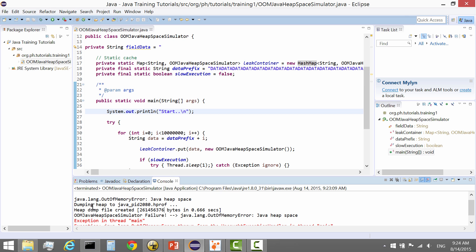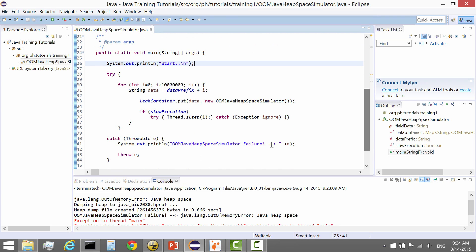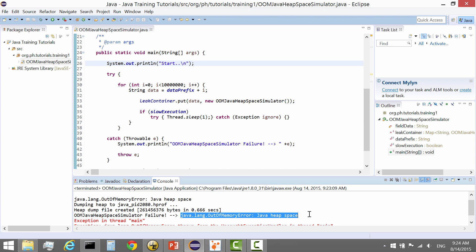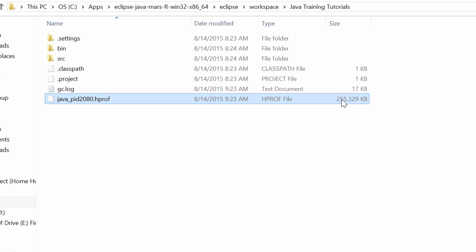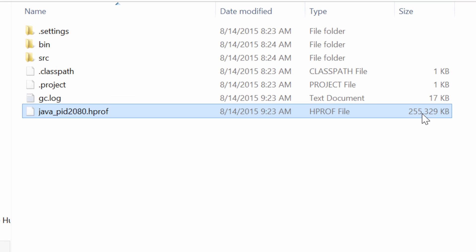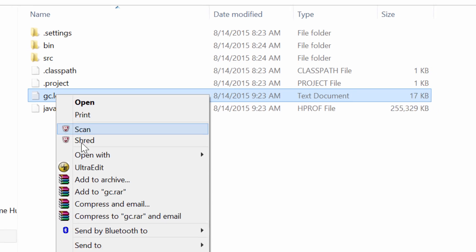That's what happened here. We got the OutOfMemoryError which we caught, and the program exited. If we go in our project, you'll see the heap dump file was generated - 255 megabytes, essentially the same size as the heap. We also have a GC log that was created.